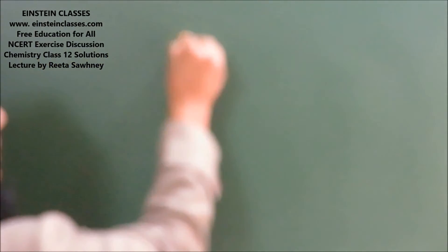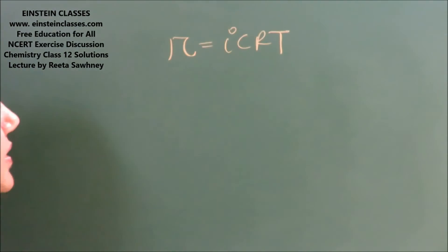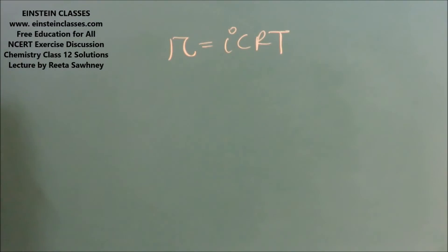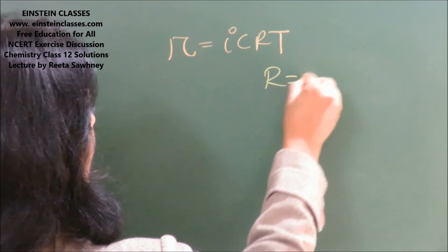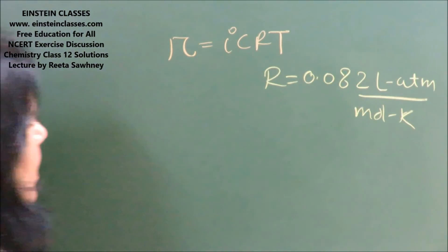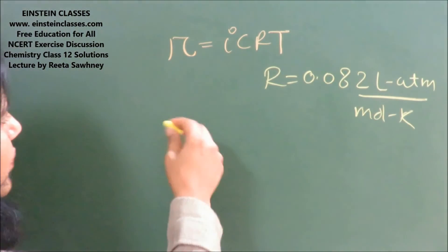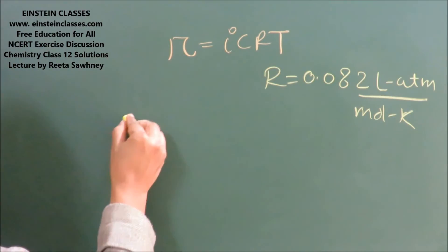Now we are going to use the concept: osmotic pressure π is equal to iCRT, where π represents the osmotic pressure, i is the van't Hoff factor, C is the molarity of the solution, and R is the universal gas constant whose value is 0.082 liter·atm per mol·Kelvin. The aim is to find out the amount of calcium chloride dissolved in the solution.